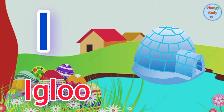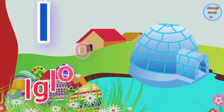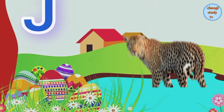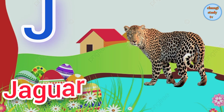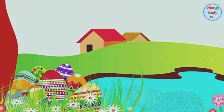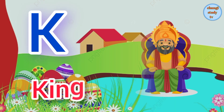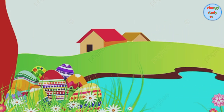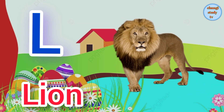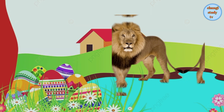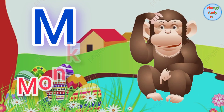I for igloo. J for jaguar. K for king. L for lion.